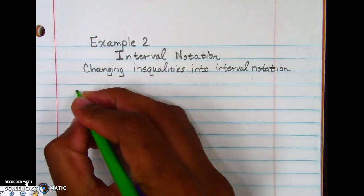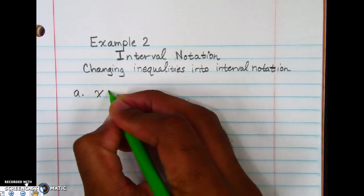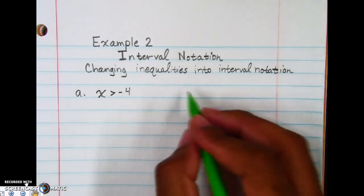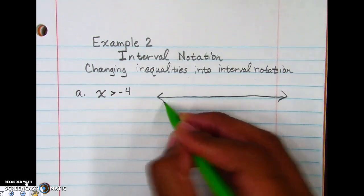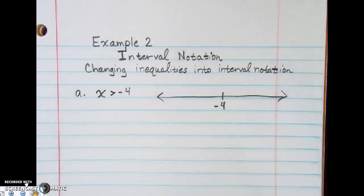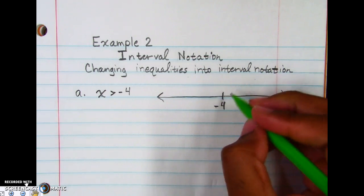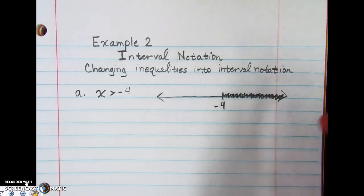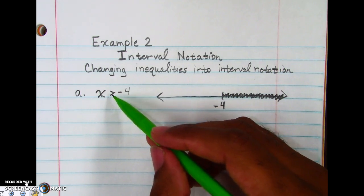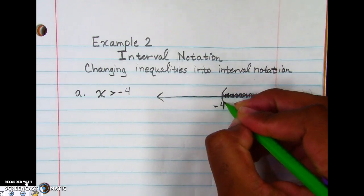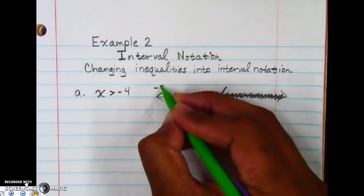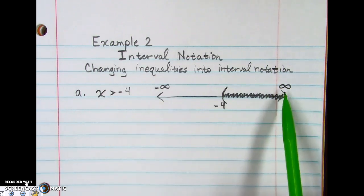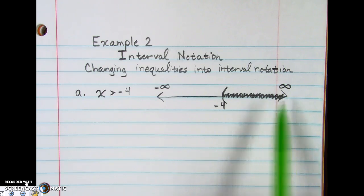Starting with A, x is greater than negative 4. Since x is on the left side, when we graph this out, we have negative 4 right there. X is greater than negative 4, so we shade bigger than negative 4 — all these numbers to the right. We put a parenthesis because it's greater than, not equal to, and it cups around the shaded part. Then we put our infinities there. When we do our infinities, there are no brackets or parentheses on the graph itself — only when we put on the numbers.